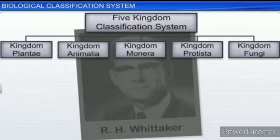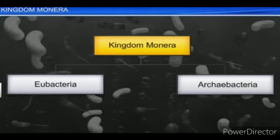The five kingdom classifications are: Kingdom Monera, Kingdom Protista, Kingdom Fungi, Kingdom Plantae, and Kingdom Animalia. We then discussed Kingdom Monera, where bacteria are the sole members.